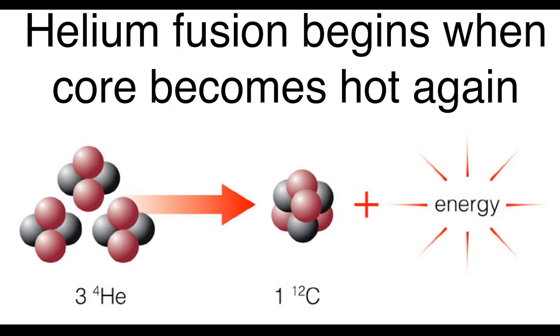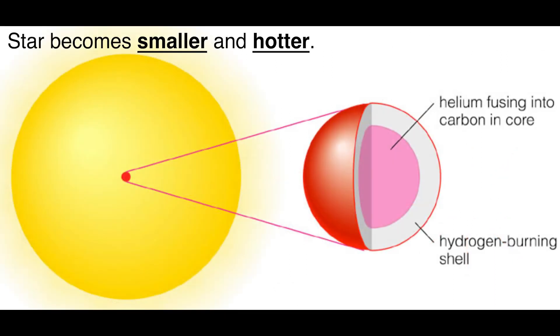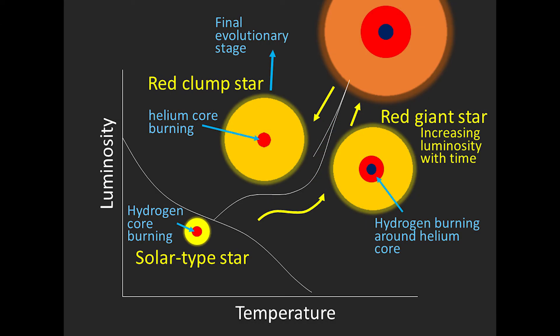If the star is sufficiently massive, the collapsing core can become hot enough to support nuclear fusion using helium, where helium atoms fuse to produce heavier elements and energy. As the helium quickly runs out, the core shrinks again, and this time the helium starts to burn in a shell around the core, and hydrogen may start burning in a shell around that.